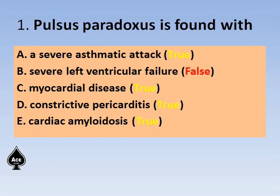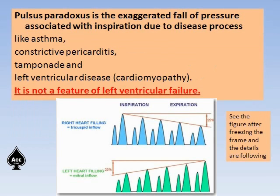Since this is not an examination but only practice, I am following the true and false statement methodology. Pulsus paradoxus is actually an exaggerated fall of pressure associated with inspiration due to disease processes like asthma, constrictive pericarditis, cardiac tamponade, and left ventricular disease, mainly cardiomyopathy. It is not a feature of left ventricular failure.